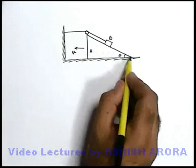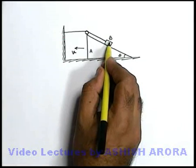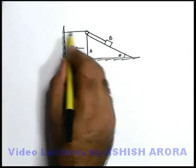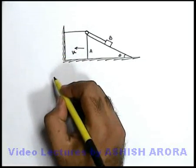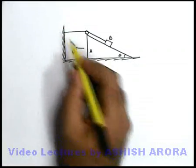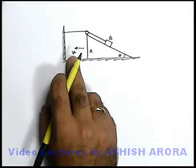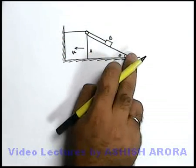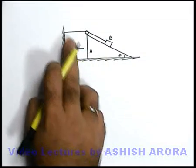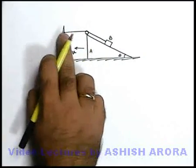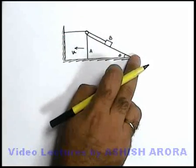Say we have a triangular wedge block A over which another block B is placed, connected to a string. The other end of the string passes through a pulley and is attached to the left wall. In this situation, if block A moves toward the left with a velocity v, certainly B will slide down. As the wedge goes toward the left, the length of string on one part will reduce and on the other part will increase, so B must slide down.